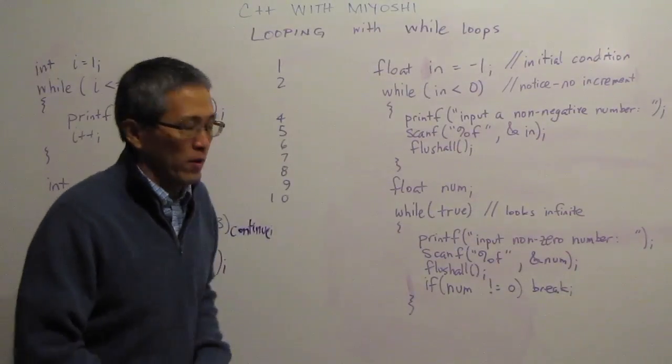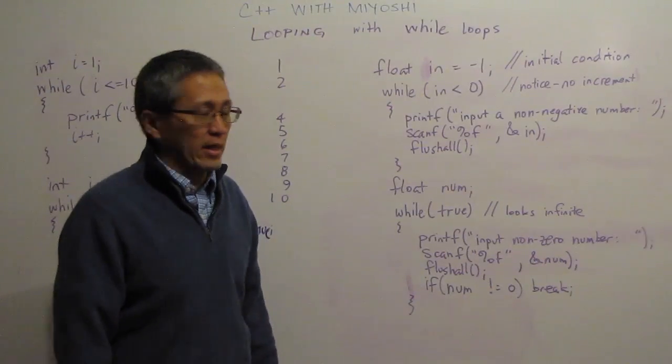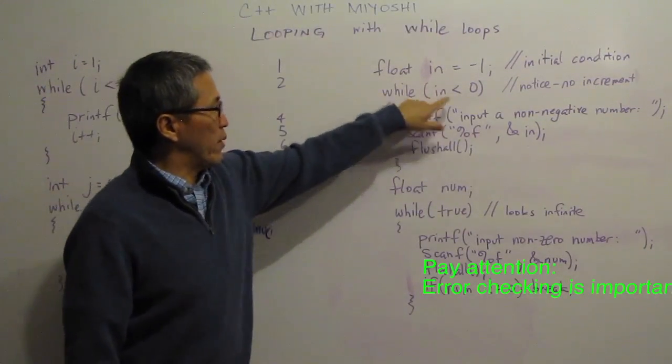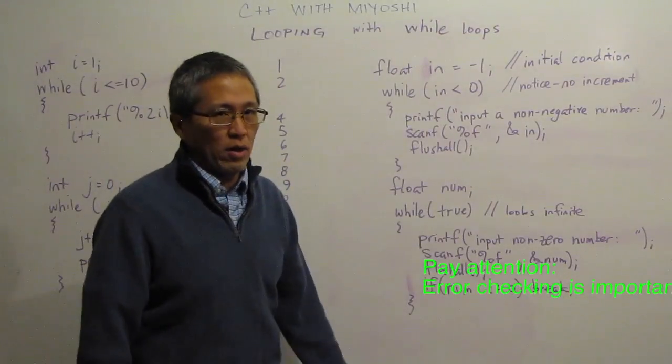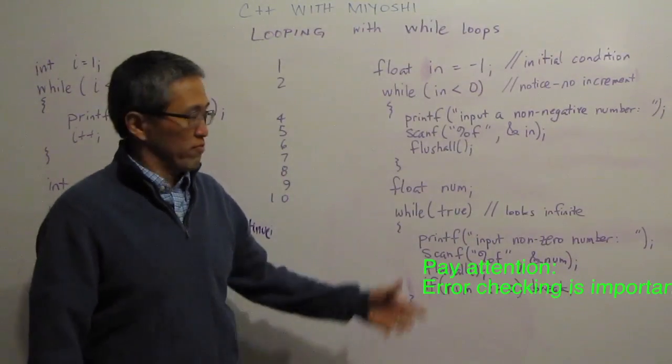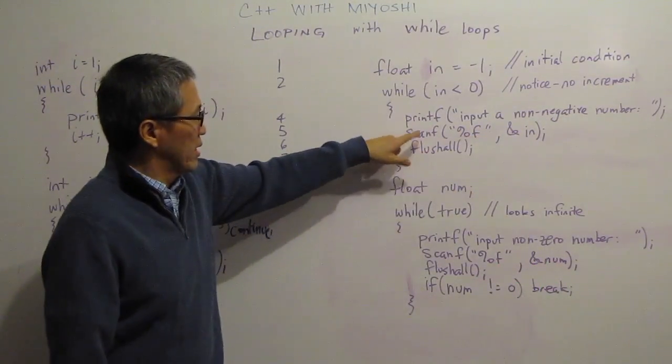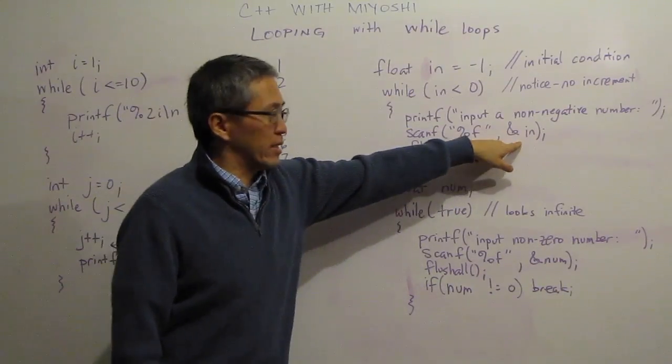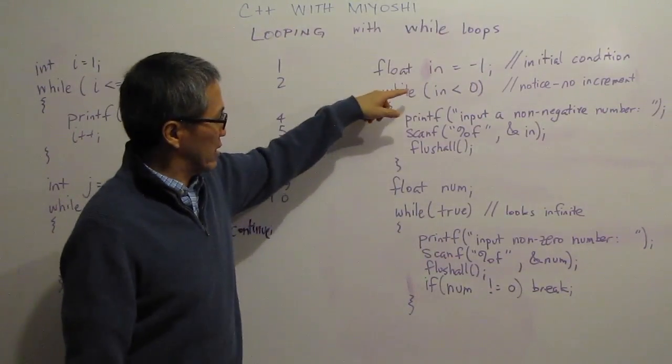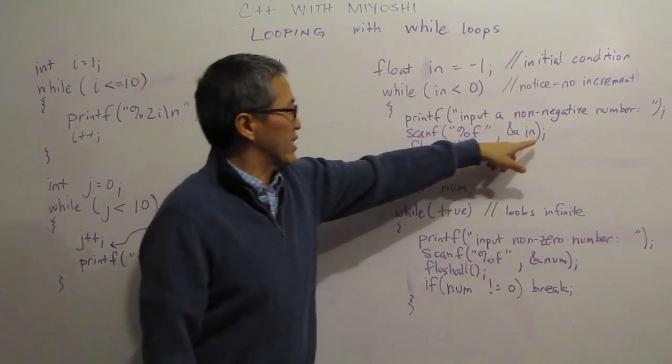Over here we have a couple more different things and these are more like our error checking type loops. Here we have an initial condition of my in is less than negative 1 and then I'm going to do my while loop as long as in is less than 0. Notice that there's no increment in here. I'm just going to print out a prompt and have the user input a non-negative number. So as long as the user puts in a negative number it's going to keep coming through there. It's going to check through - if in is a positive number, as soon as in becomes a 0 or a positive number then it will exit my loop and come down and do the next thing.